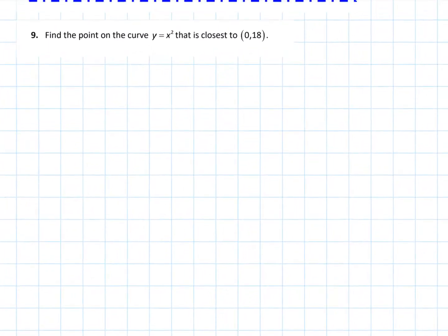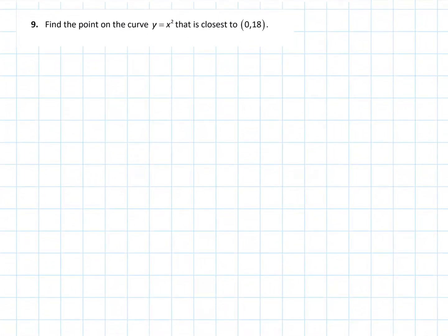Let's find a point on the curve of the parabola y equals x squared that is closest. So we're actually going to be minimizing, when we say closest that means we're going to minimize a distance. So we're minimizing a distance to this point, to the point (0,18).